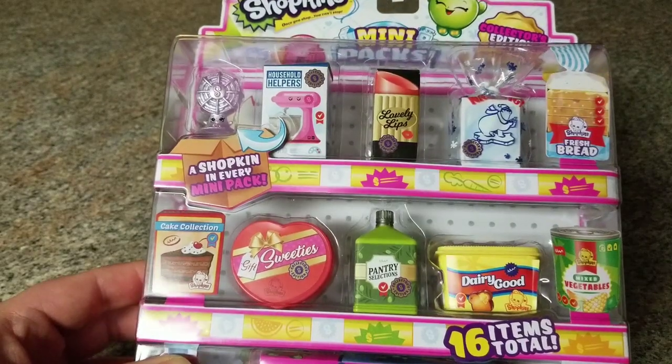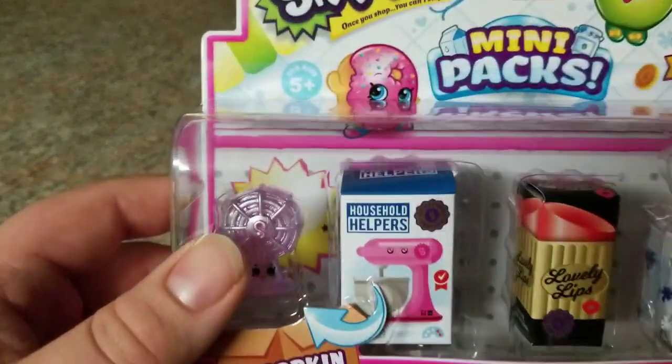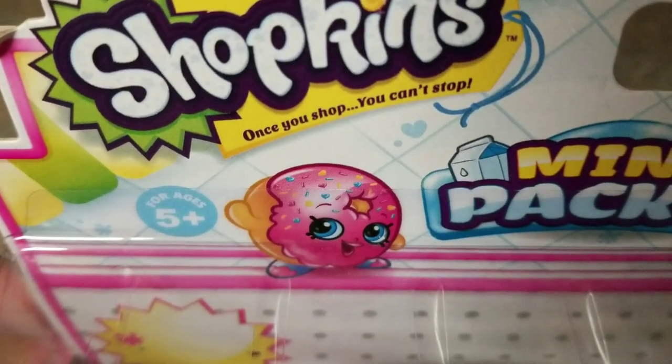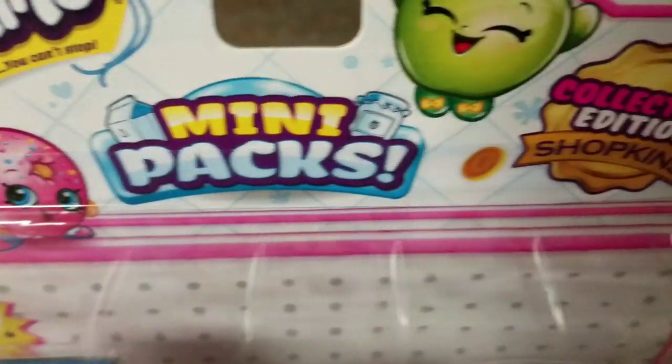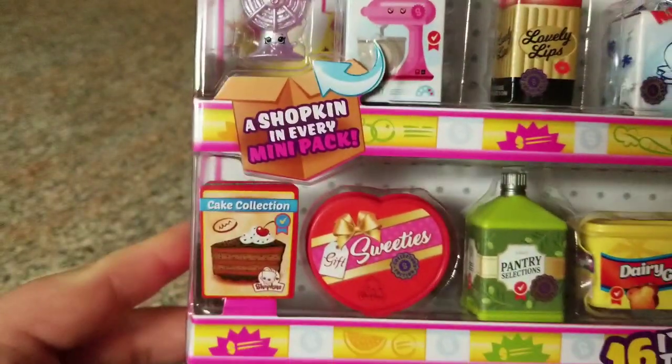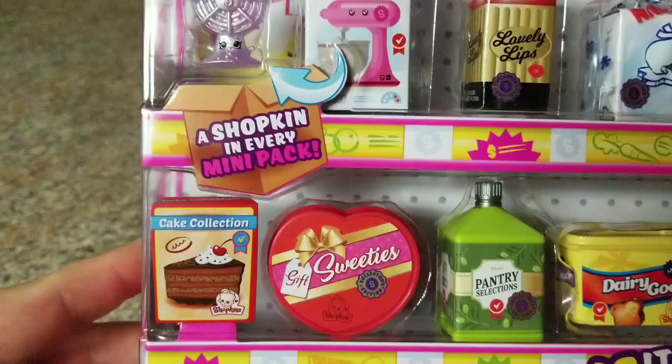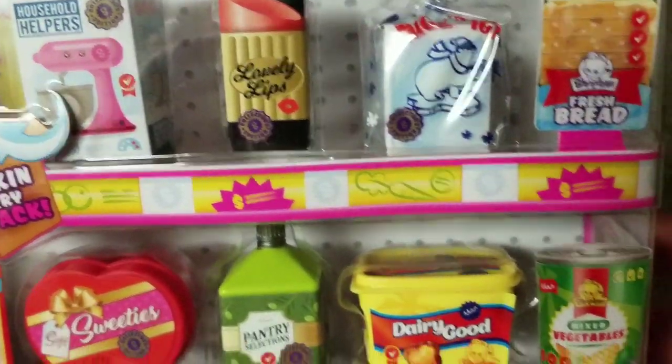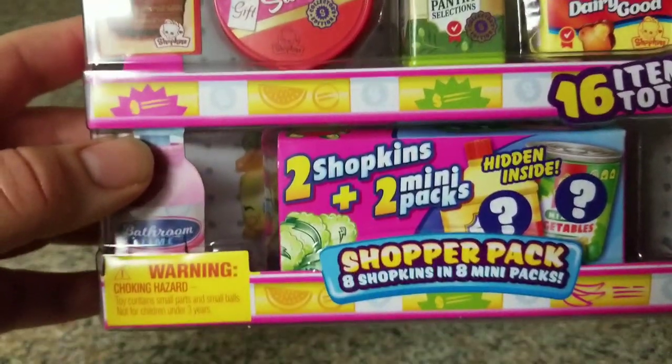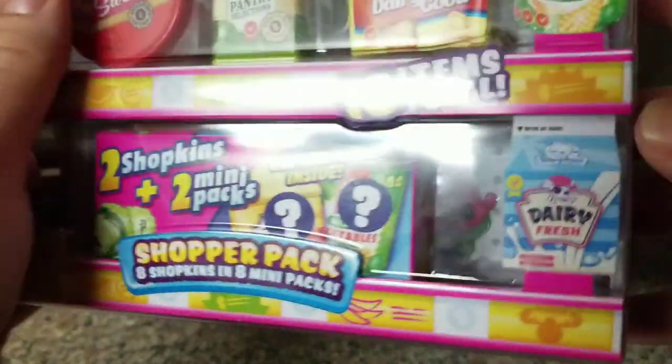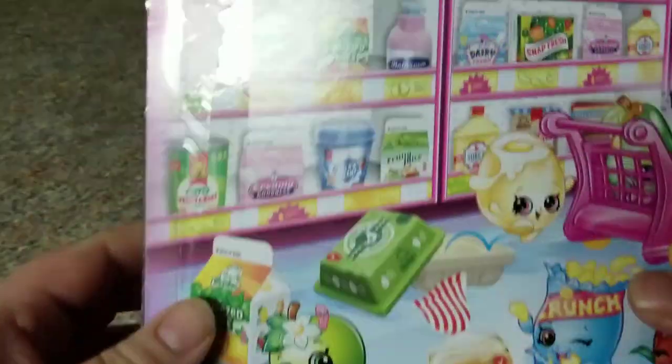Alright, what do we got here? Let's see, this is a Shopkins 'once you shop you can't stop' mini packs collectors edition Shopkins. It says a Shopkin in every mini pack. As you see here, we got some kitchen stuff here, kitchen two Shopkins plus two mini packs hidden inside. Can't wait to see what those are.